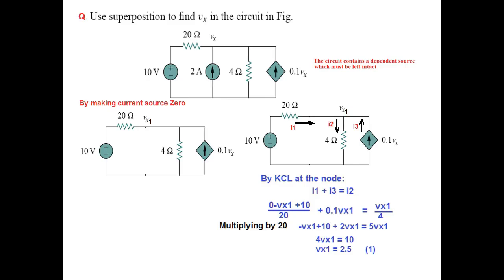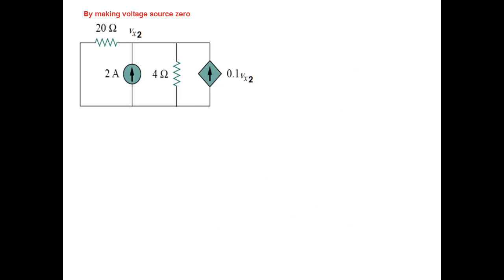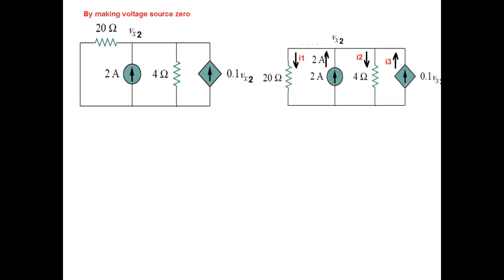This result is due to the voltage source. Now let's use the current source instead. The voltage source is shorted, and we will find Vx2 due to the current source. Again, this can be solved by the nodal method — all top points are Vx2. We write the nodal equation and redraw to get the simplified diagram.